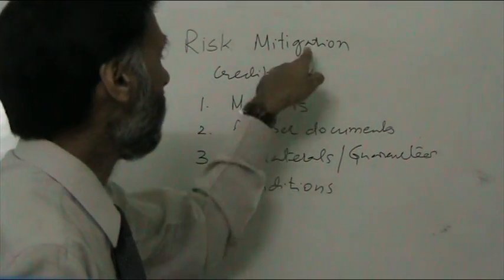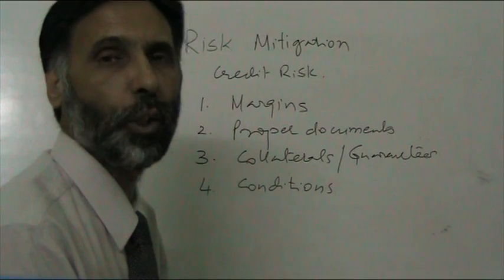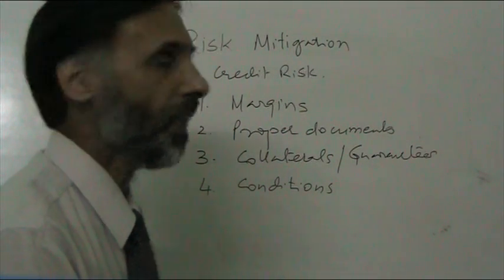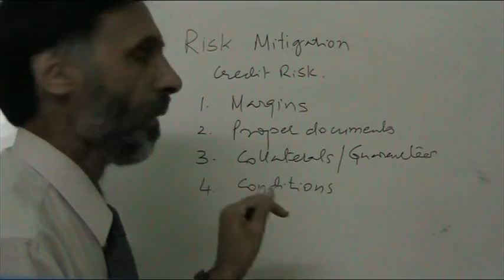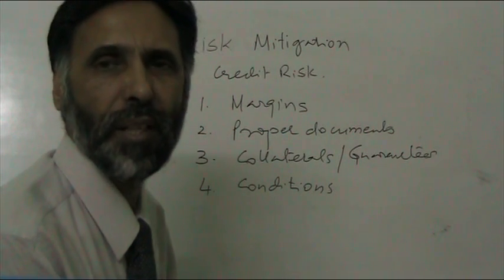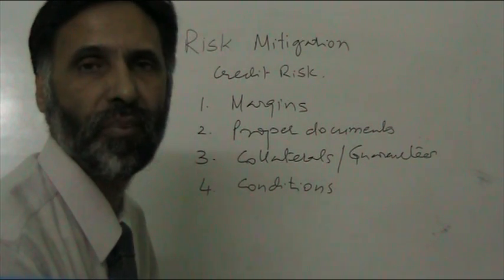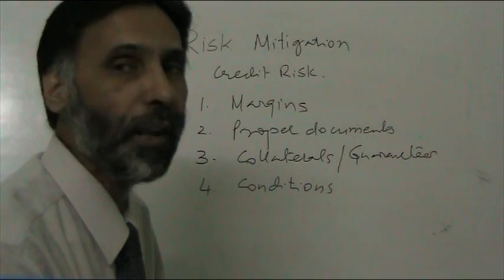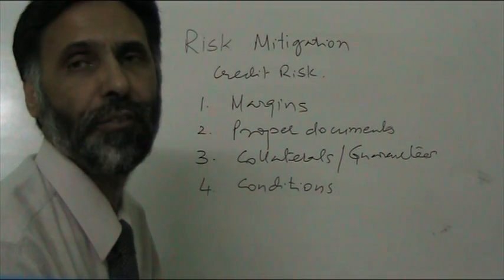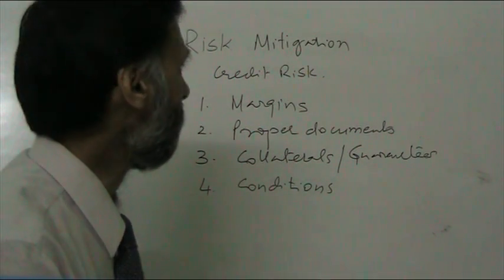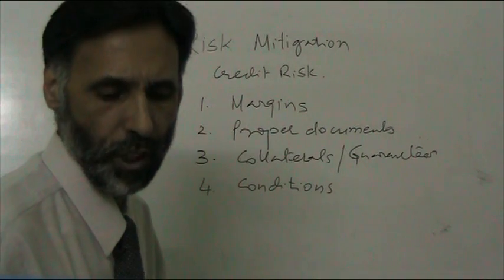This mitigation of risk in different situations will be through different tools. For example, operational risk cannot be mitigated through these measures. To mitigate operational risk, the bank may have to strengthen its procedures and systems, carry out regular inspections, educate its staff, and so on. Risk mitigation tools differ from situation to situation.